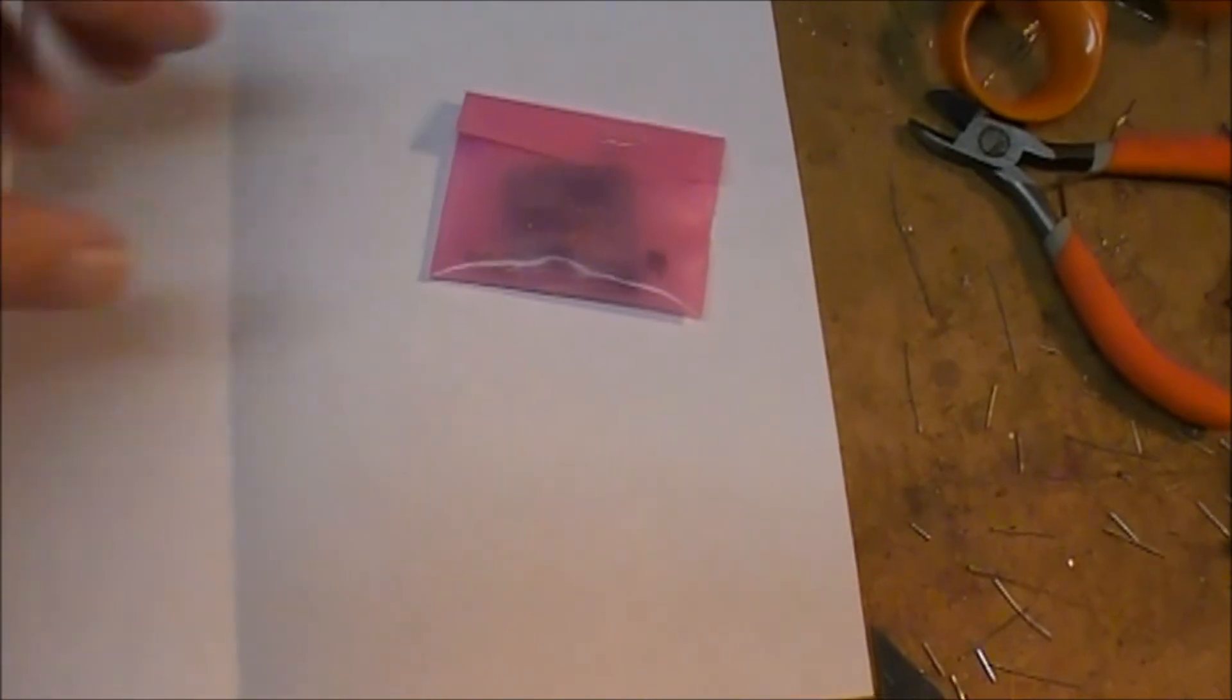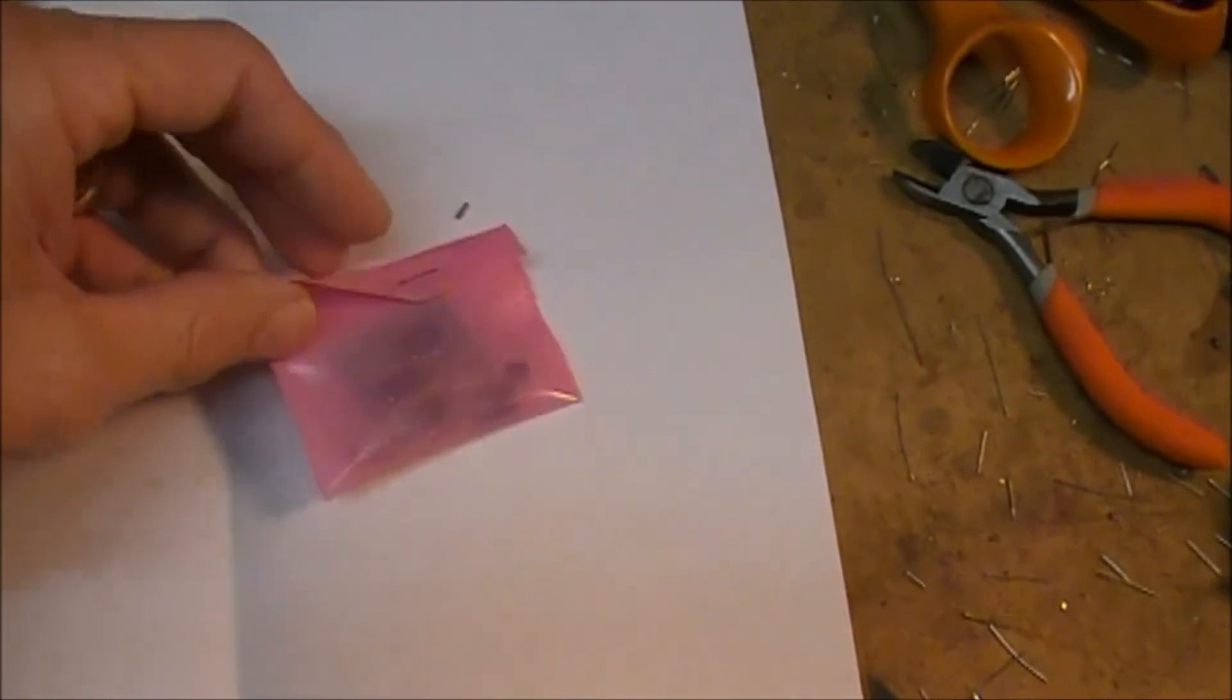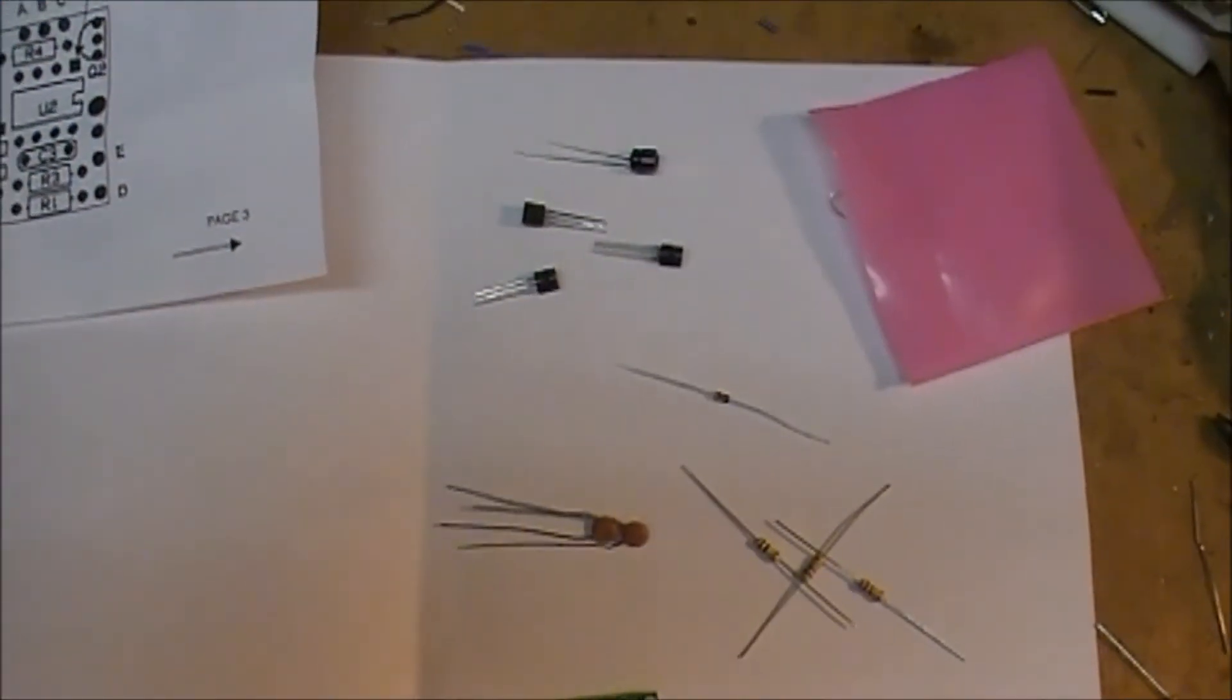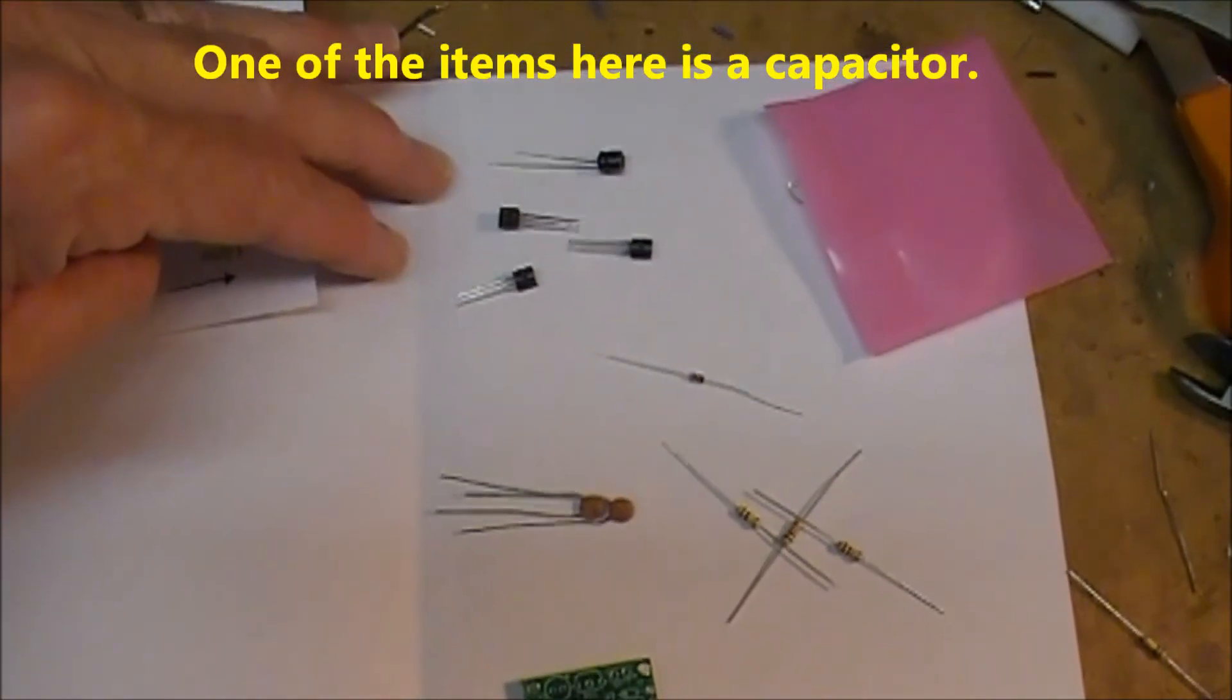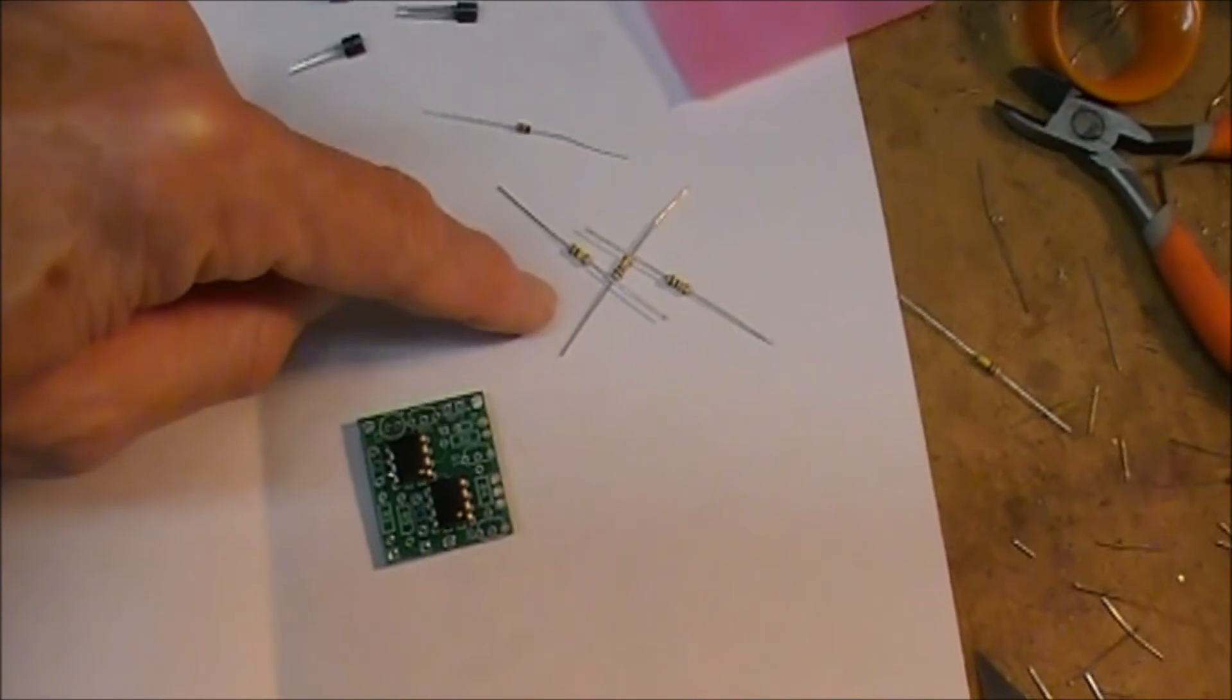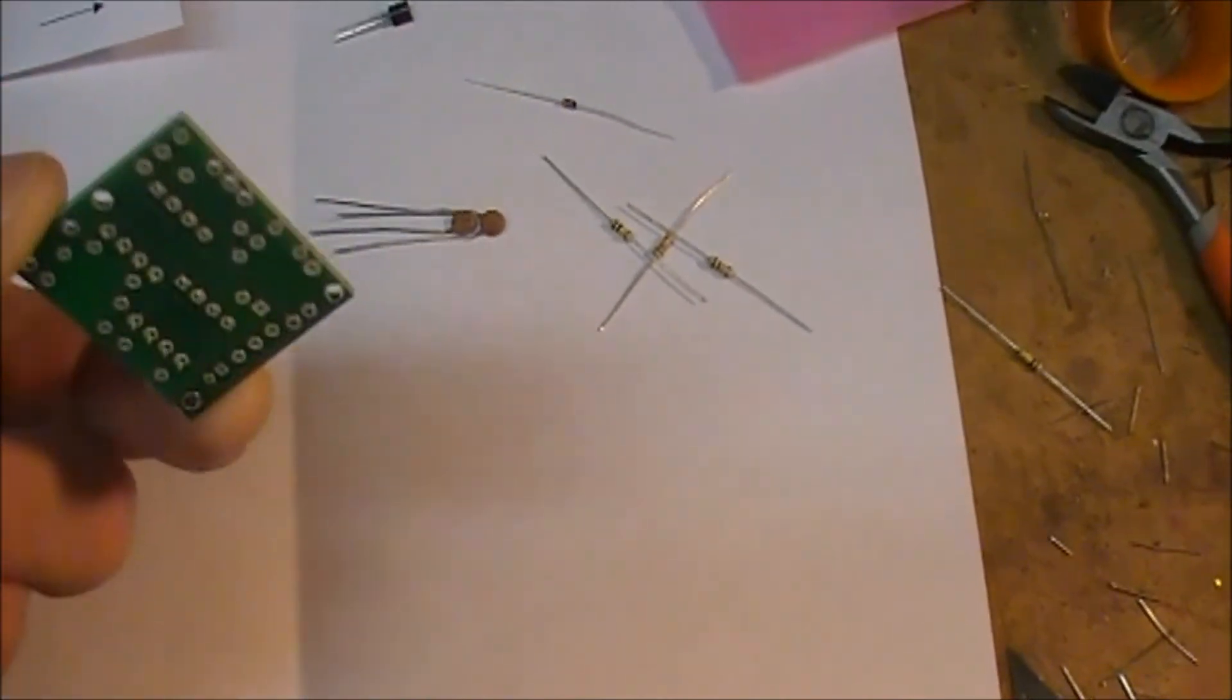The pink envelope to the right contains the parts in the anti-static bag. I just opened up the kit contents, and as you can see, it's a very basic kit as far as the components. There are four transistors, one diode, two capacitors, three resistors, and two ICs that are already mounted on the board.